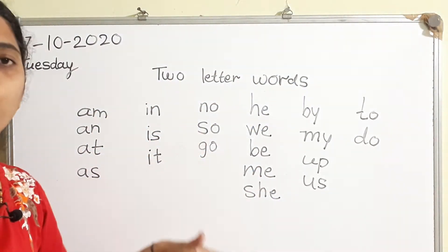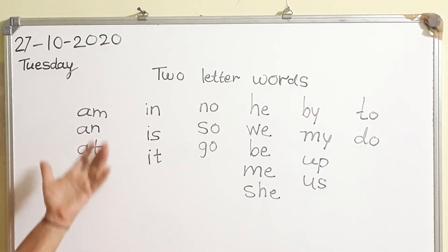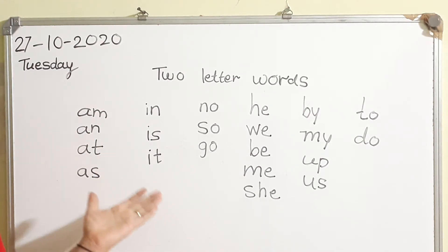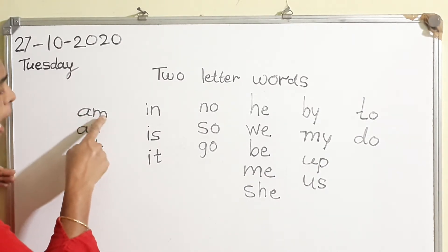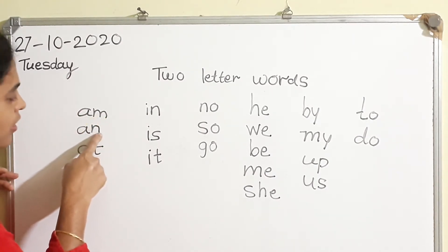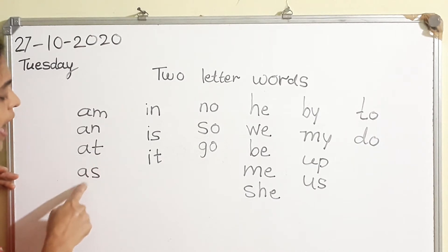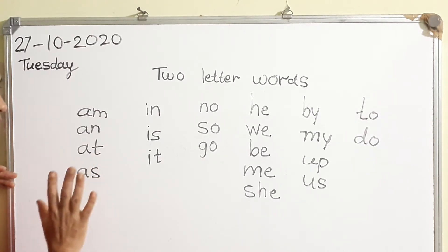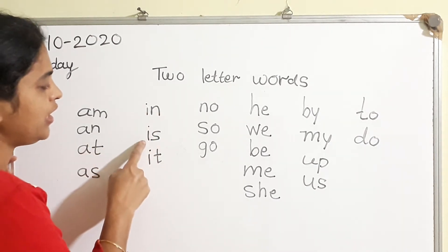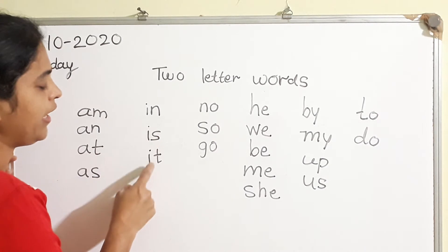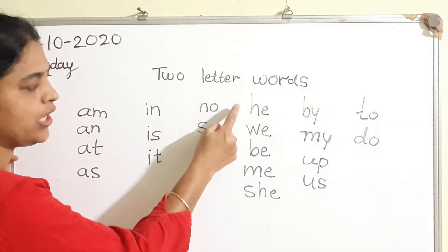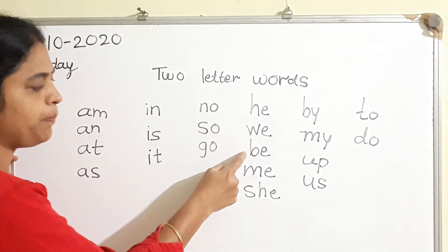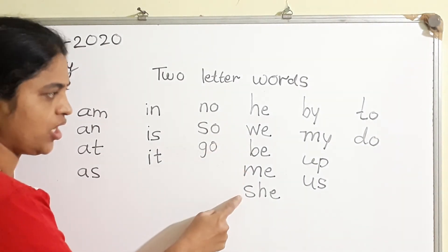Two-letter words are very, very important. We use all these letters in sentence formation. Let's start: a, m, an, at, as, in, is, it, no, so, go, he, we, be, me, she.